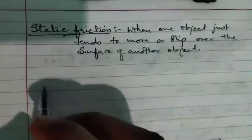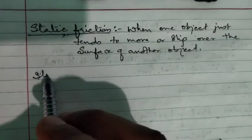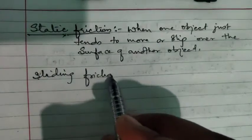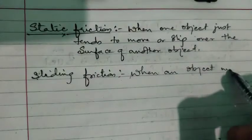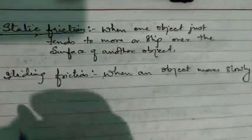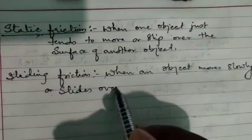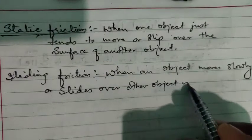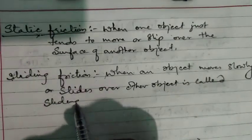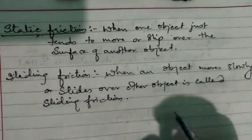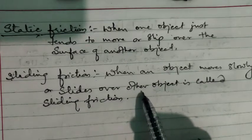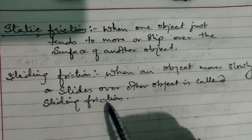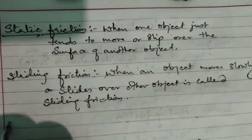Next is sliding friction. Sliding friction means when an object moves slowly or slides over another object, that type of friction is called sliding friction. By the name you can understand — sliding means to slide slowly. When an object slides slowly over another object, the friction produced is called sliding friction.